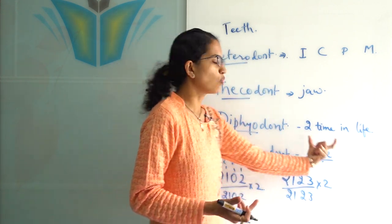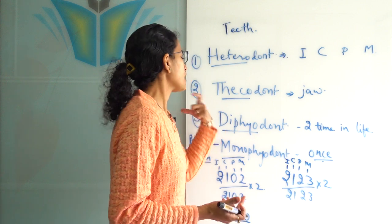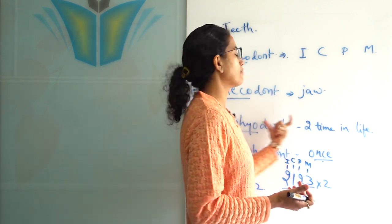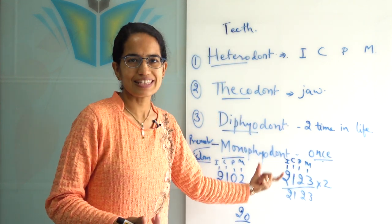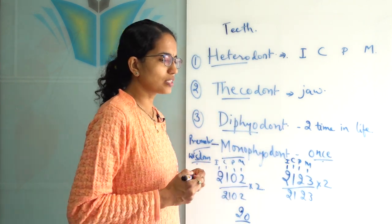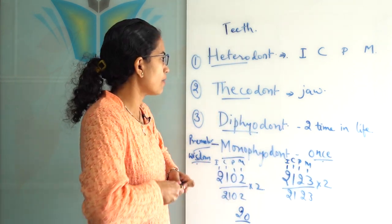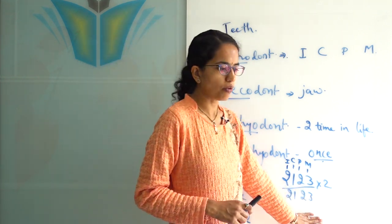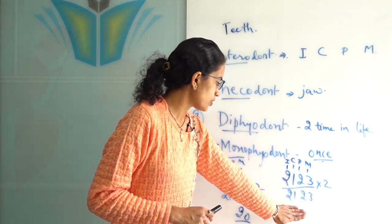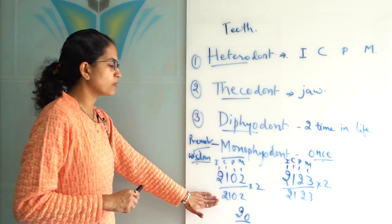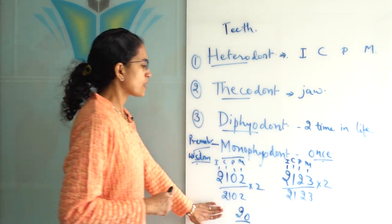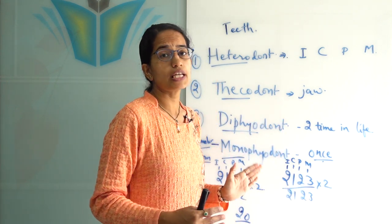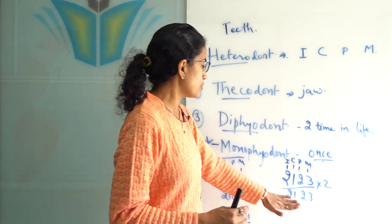Monophyodont are those teeth which appear only once in the life cycle. However, by and large we say human teeth are diphyodont because that is what we see in the majority. This was a simple introduction about human teeth, the dentition, and the dental formulas — the adult formula and the formula for a child less than two years.